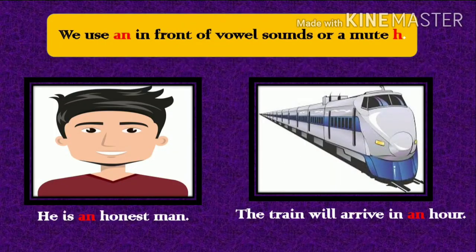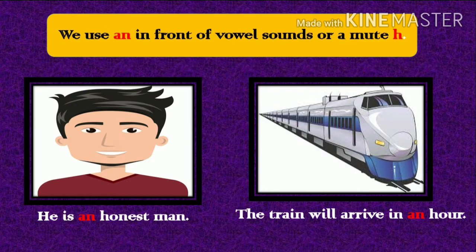Now students, there is an important fact about the article AN. We use AN in front of vowel sounds or a mute H. For example: he is an honest man; the train will arrive in an hour. You must be wondering why we use AN in front of 'honest' and 'hour'. When we pronounce the word 'honest' or 'hour', we don't say the H — we hear the O sound, the vowel sound. That is why we use the article AN in front of these words.